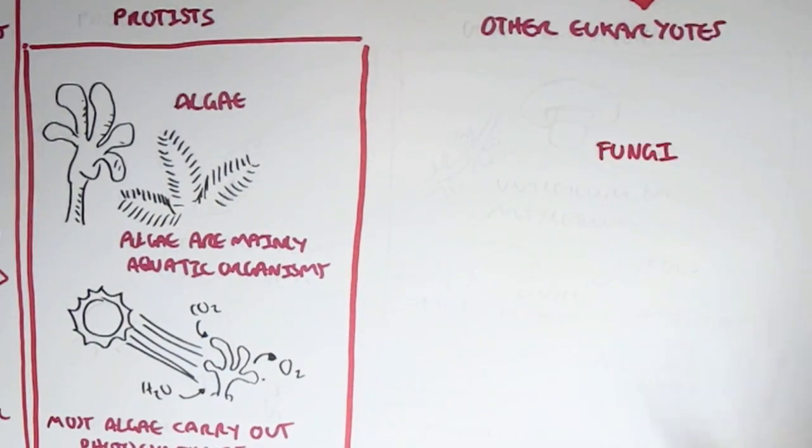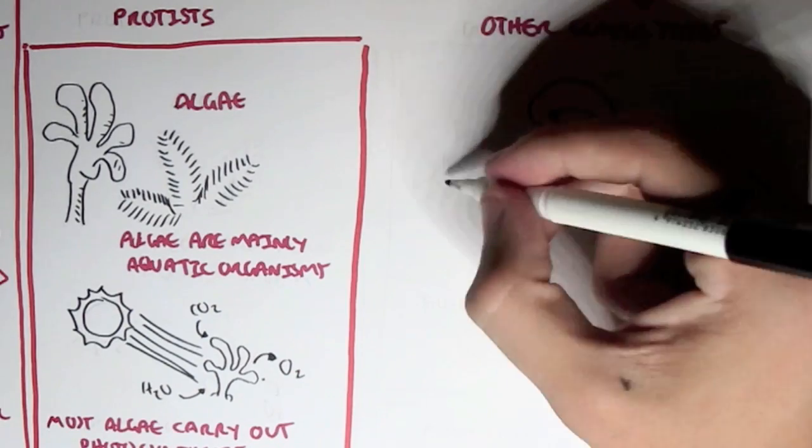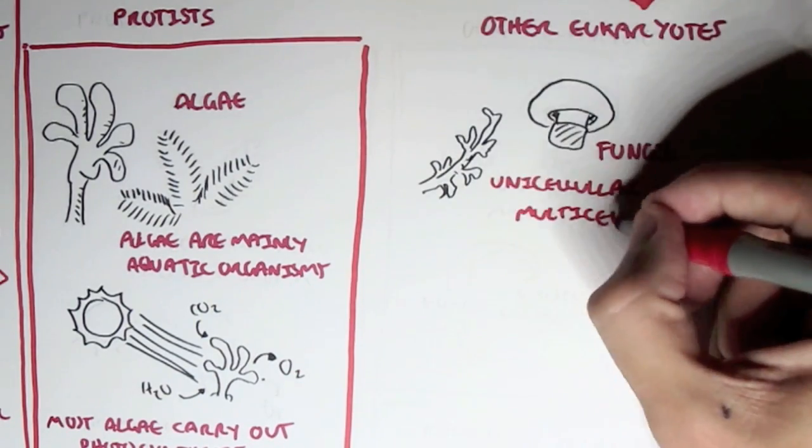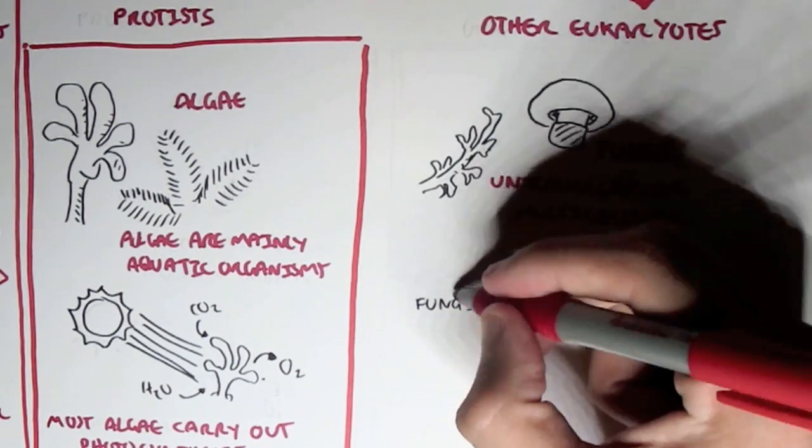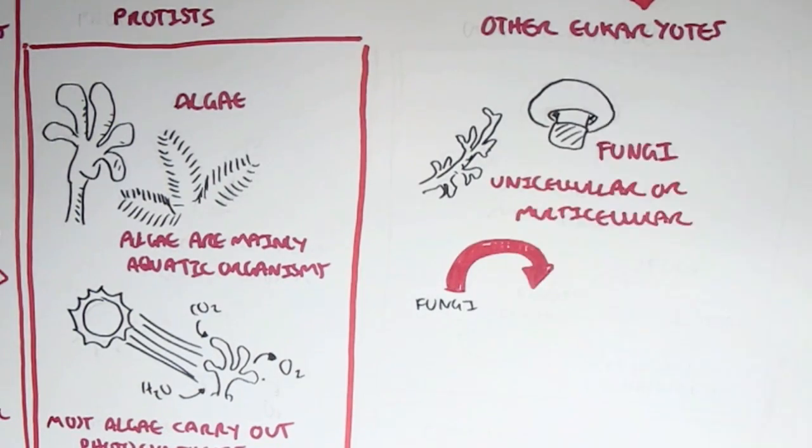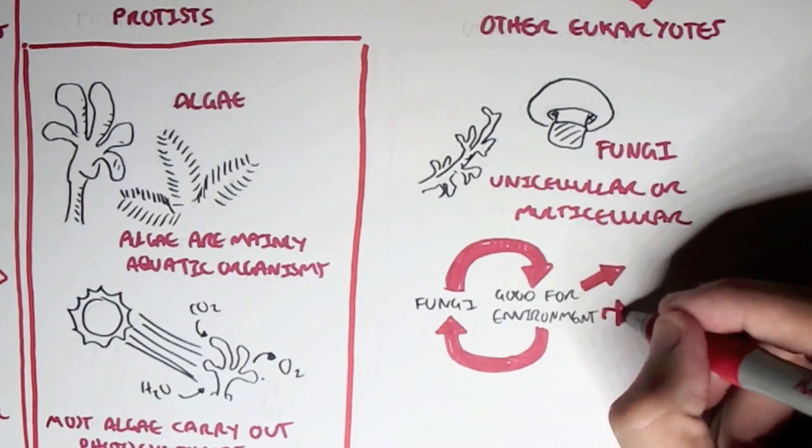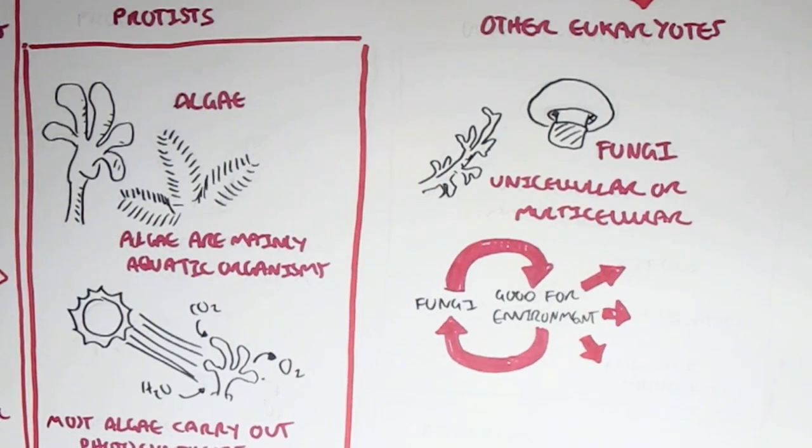Let's look at other types of eukaryotic microorganisms. And these include the fungi. And when we think of fungus, fungi, we think of mushrooms. And these fungi, they are unicellular, or they could be also multicellular. And we find them everywhere. And fungi are actually excellent for the environment. They're very good for the environment, actually. And very good for humans.